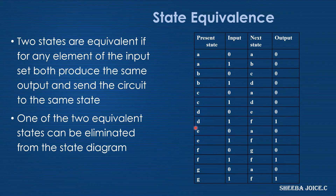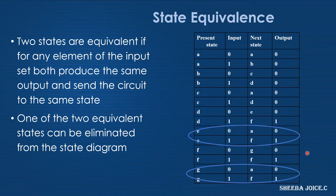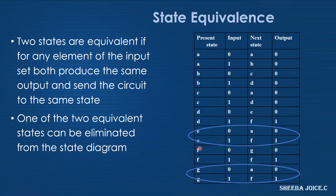When we compare, we can see that state E and state G are equivalent. For state E, when the input is zero, the next state is A and the output is zero — same for state G. For state E, when the input is one, the next state is F and the output is one — same for state G. Therefore, state E and state G are equivalent.